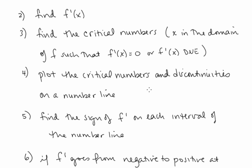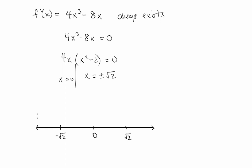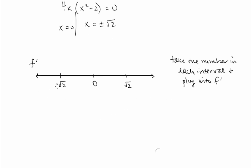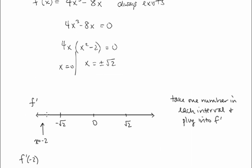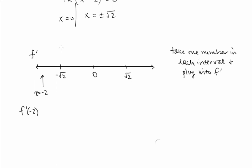Step 4: Plot the critical numbers -√2, 0, and √2 on a number line. We'll use the factored form f'(x) = 4x(x² - 2) to test signs on each interval. For x = -2 (less than -√2): negative times positive — that's negative. For x = -1 (between -√2 and 0): negative times negative — that's positive. For x = 1 (between 0 and √2): positive times negative — that's negative. So f' is negative, positive, negative on those intervals.